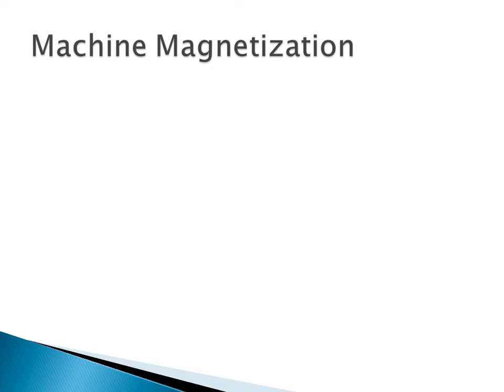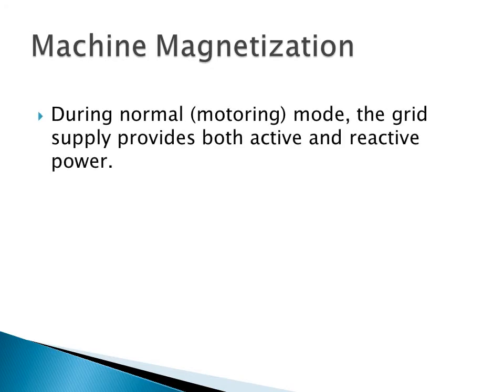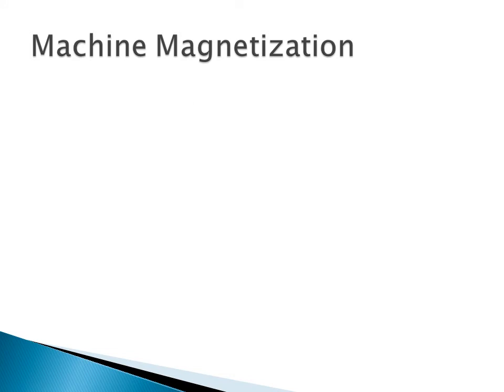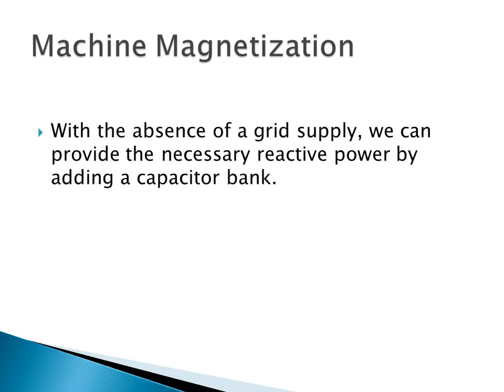During normal operation, we'd have the grid supply, which would provide both active and reactive power, where the active power is used to produce the torque, and the reactive power is used to magnetize the machine. But since we won't have a grid supply in a lot of these isolated micro hydro setups, we can provide the necessary reactive power from a bank of capacitors.